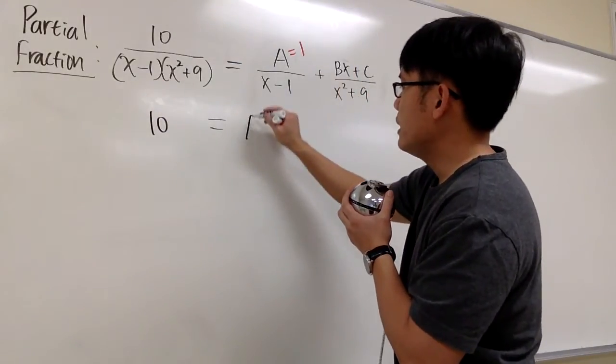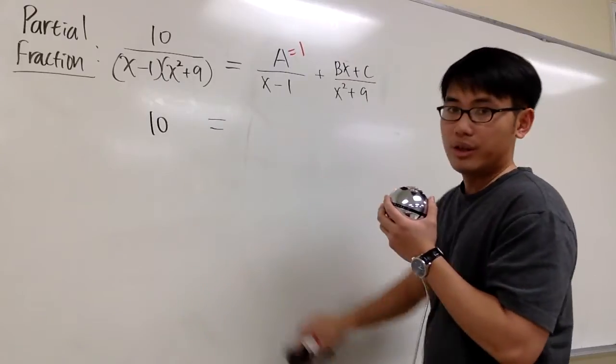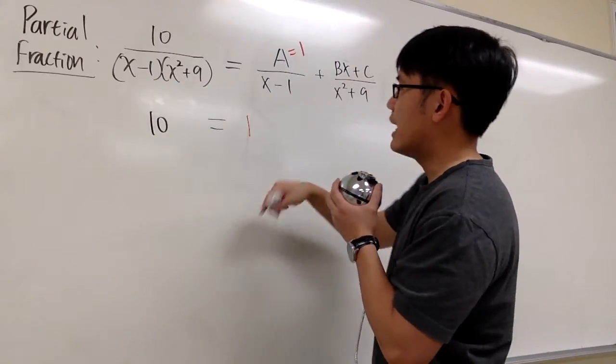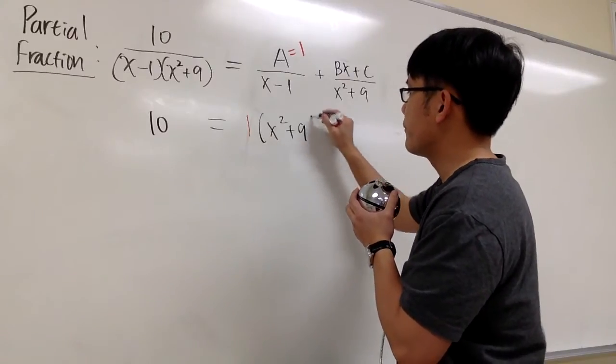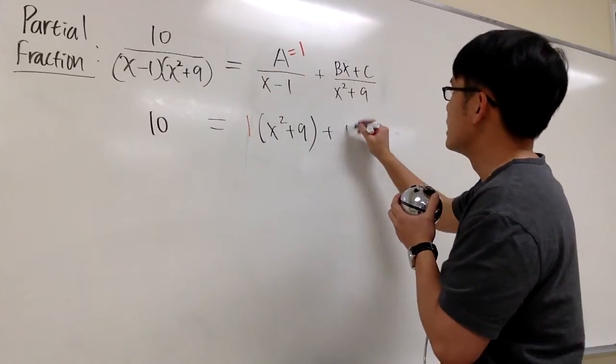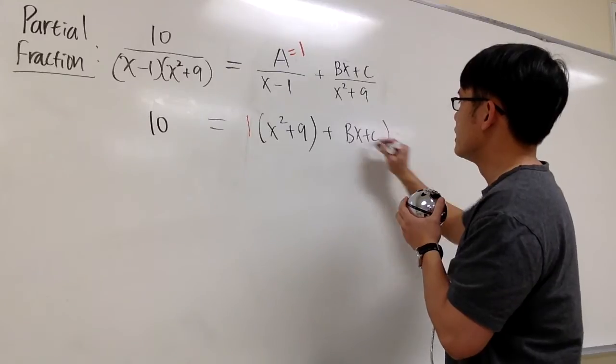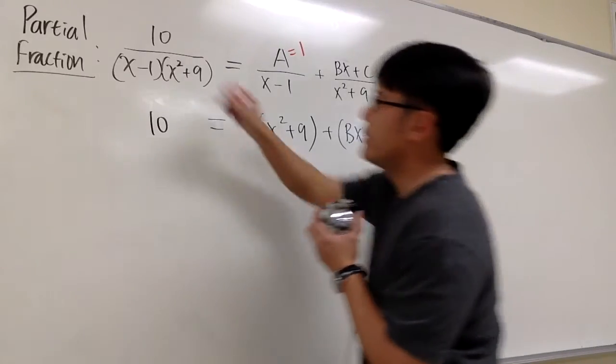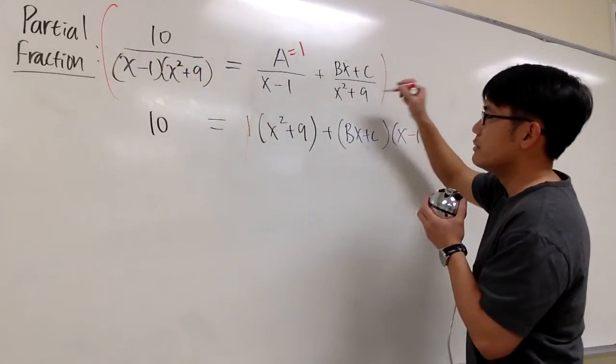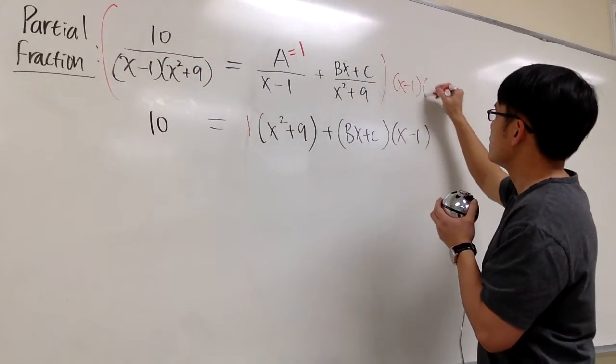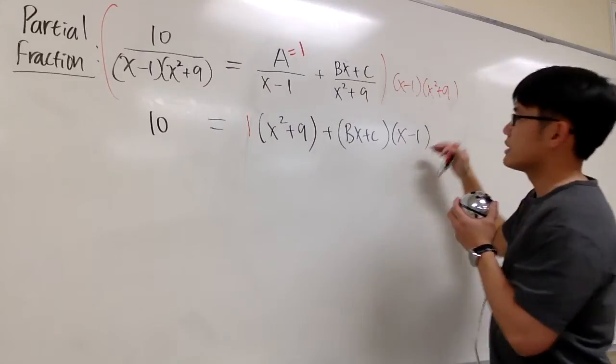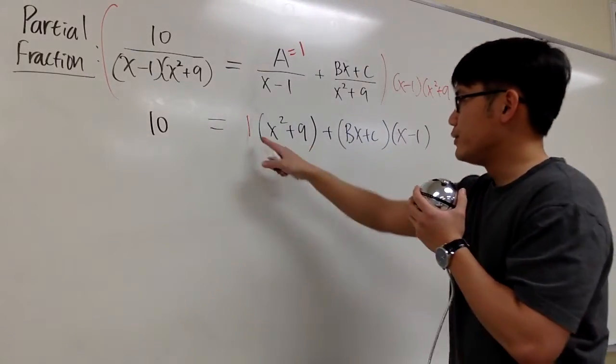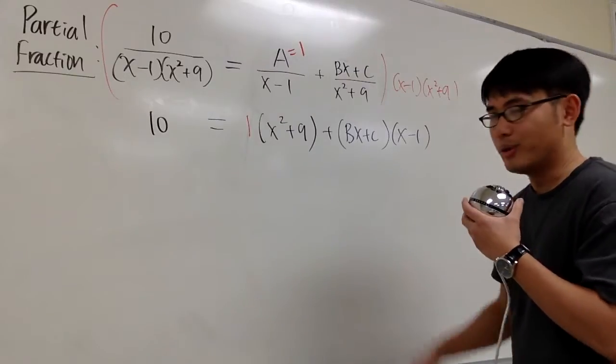And this is going to give me... Well, we know A is equal to 1 already. So I can put down 1. x - 1 will cancel out with that. So we have 1 times (x² + 9). And I have plus (Bx + C) times (x - 1). And once again, what's happening is we multiply everything by the lowest common denominator. And that's how we end up with this. And if you don't like the 1, you can get rid of that. No big deal.